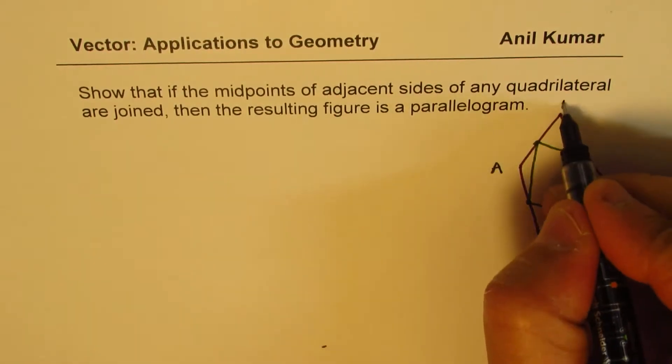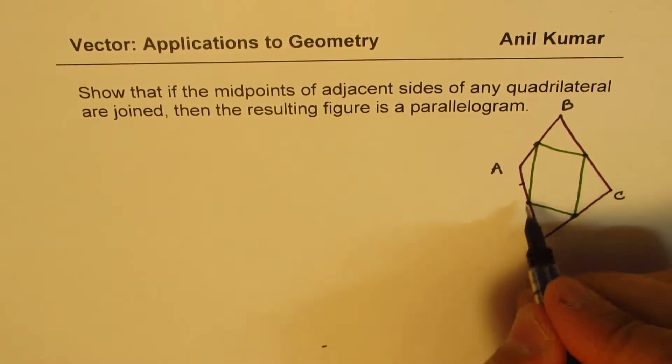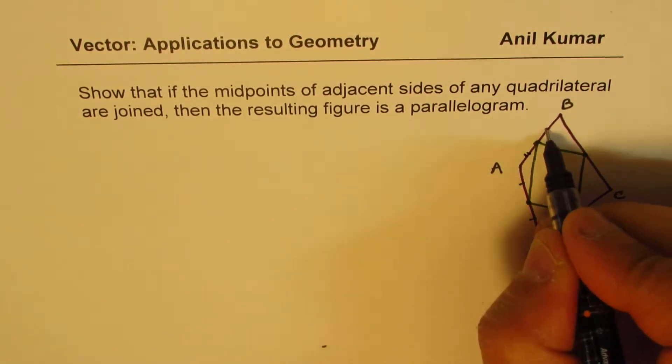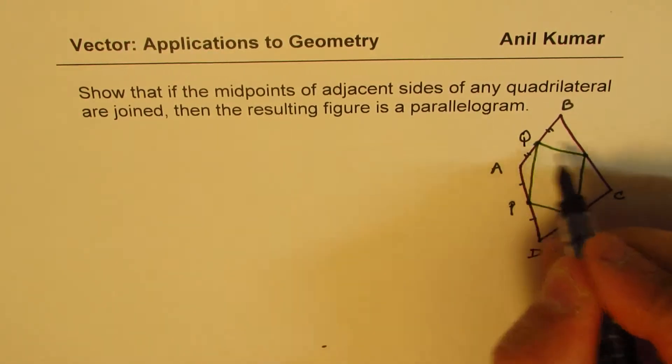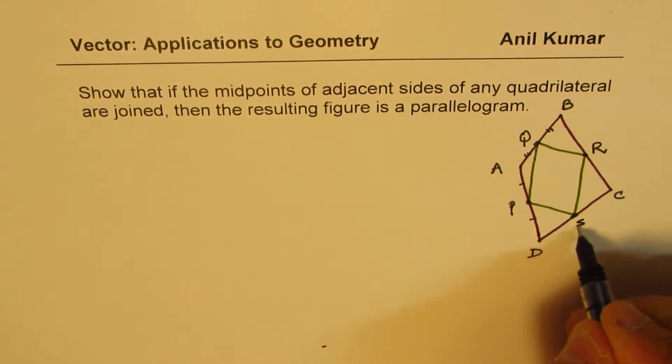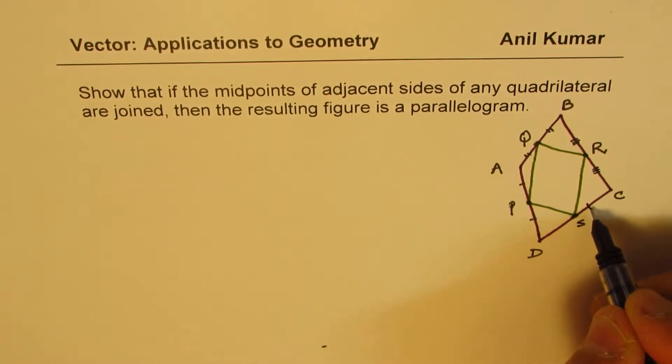So this is the quadrilateral A, B, C, D given to us. And the midpoints means these are the points which we are talking about. Let's say P, Q, R, and S. So these are the midpoints.